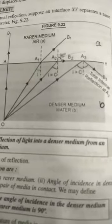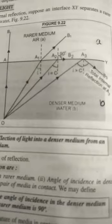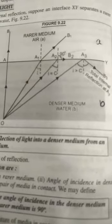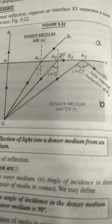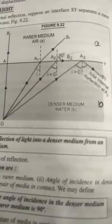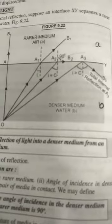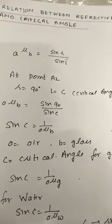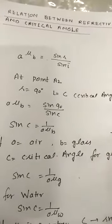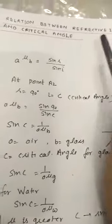If it is equal to critical angle, the ray will go in the rarer medium. But if the angle of incidence is greater than critical angle, the ray will be totally reflected in the same medium. Now come to the relation which we can derive between the refractive index and the critical angle.